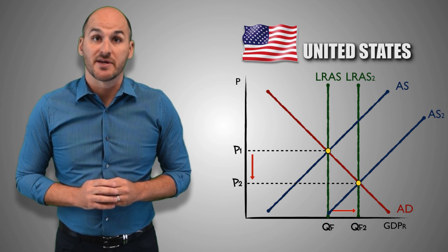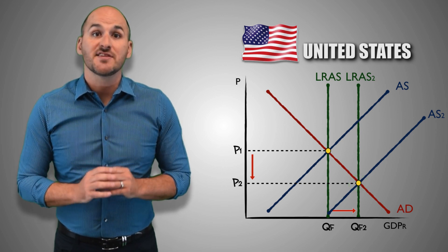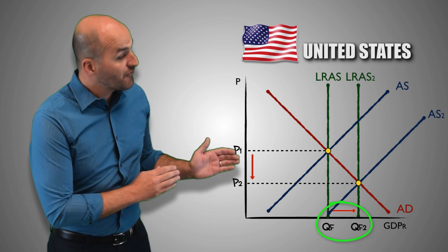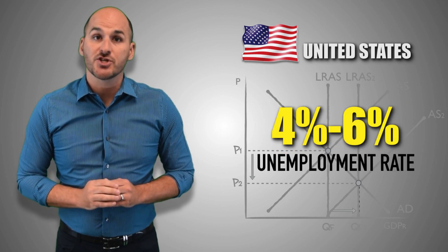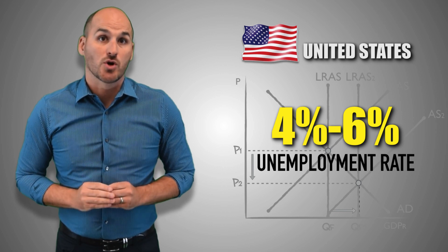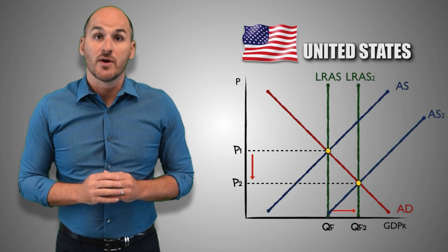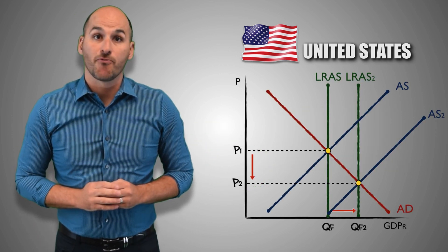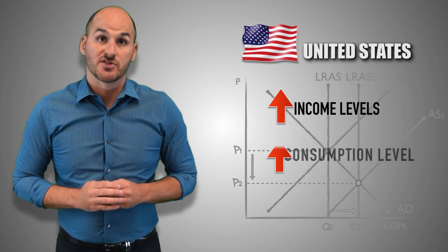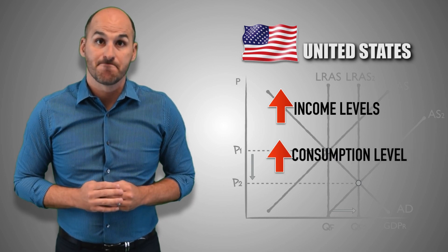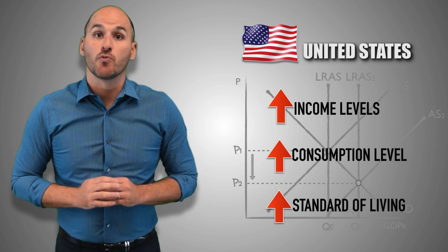With this fundamental change in long-run aggregate supply, the United States economy had a new long-run equilibrium. With the full employment of its resources, the economy's potential to produce real GDP output increased from QF to QF2. The unemployment rate at QF2 remained at 4–6% because unavoidable frictional and structural unemployment still existed, but the workers who were currently employed could now produce more due to increased productivity from technological innovation. Prices decreased in the long run, income levels rose, consumption levels increased, and the standard of living increased as real GDP per capita grew.